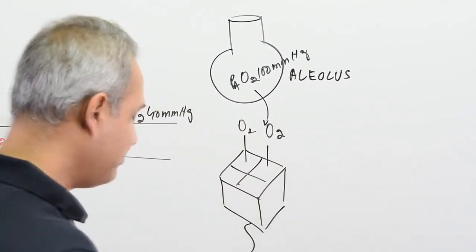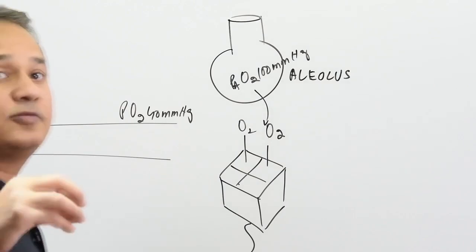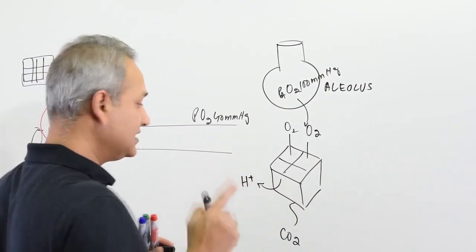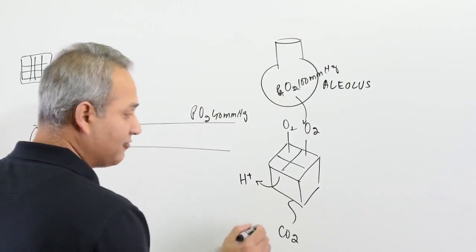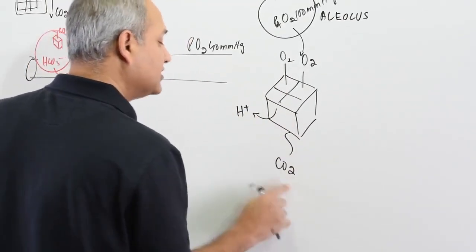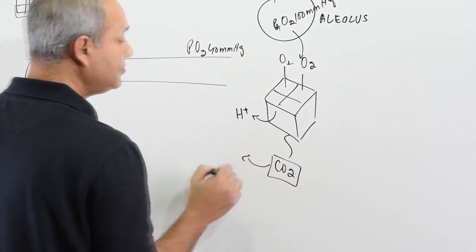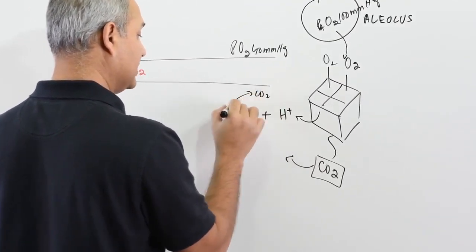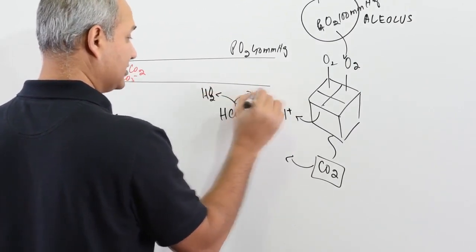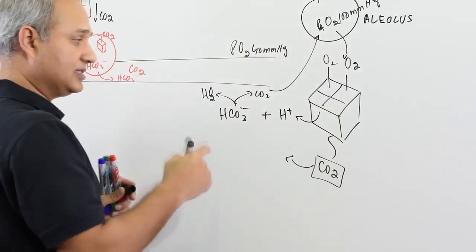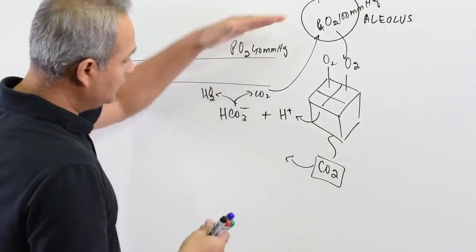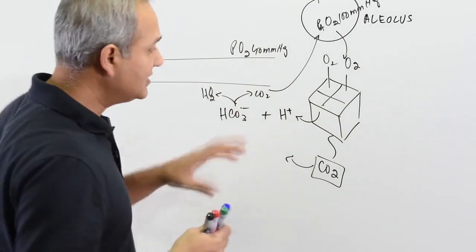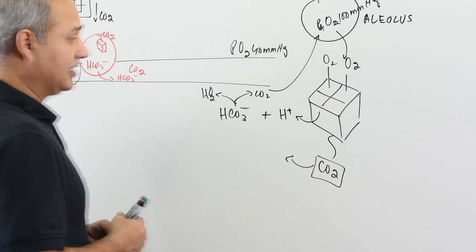When oxygen loads onto the hemoglobin, there is a conformational change — hemoglobin becomes acidic and releases hydrogen ions. This hydrogen ion, because acidity has increased, favors the release of carbon dioxide. The hydrogen ion combines with HCO₃, giving carbon dioxide plus water, and that carbon dioxide exits. One proton release has caused carbon dioxide to be removed. When carbon dioxide is removed, the pressure reduces further, which also causes carbon dioxide to be removed from the hemoglobin itself. This is the Haldane effect.